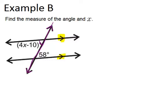And in this picture, the two angles that we're looking at are alternate interior angles, because they're on the inside of the parallel lines and on opposite sides of the transversal. So that means this angle over here has to be 58 degrees because alternate interior angles are congruent when lines are parallel. So the measure of the angle is 58 degrees.